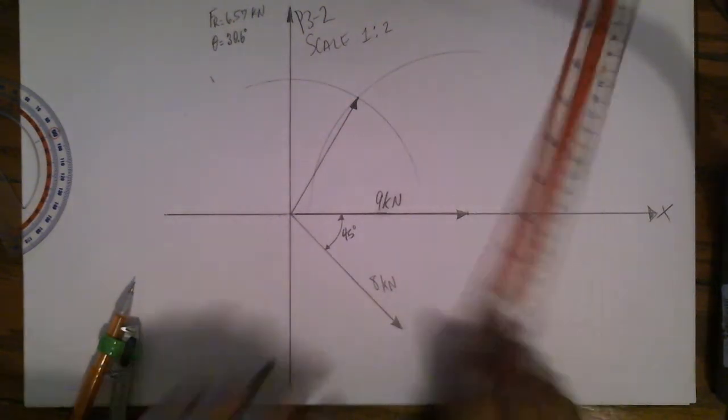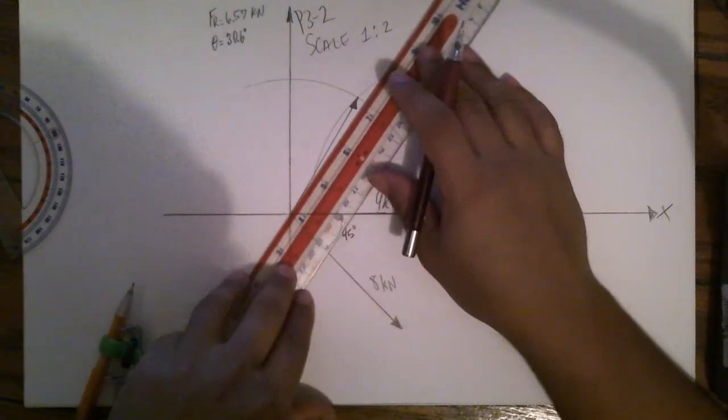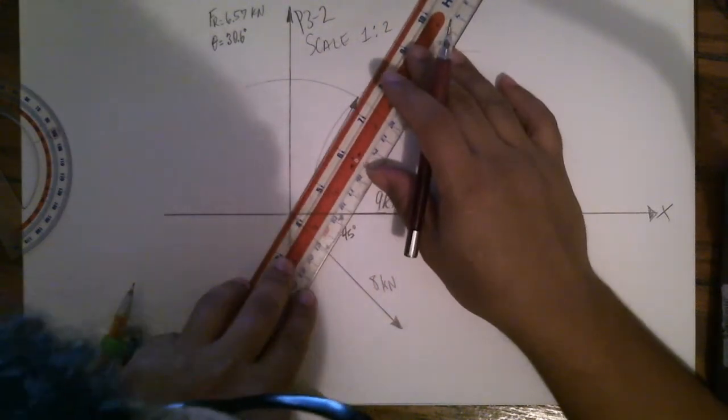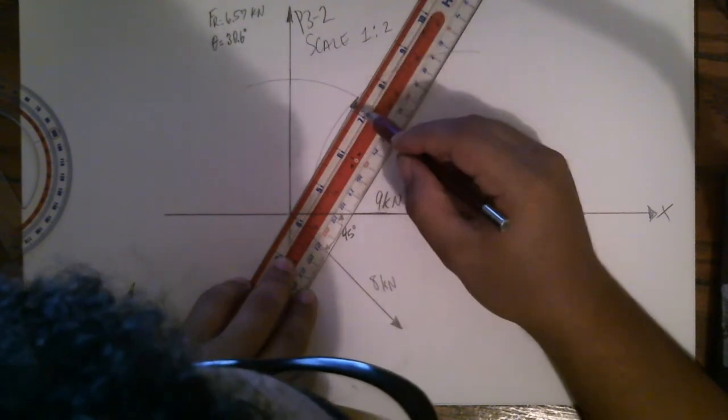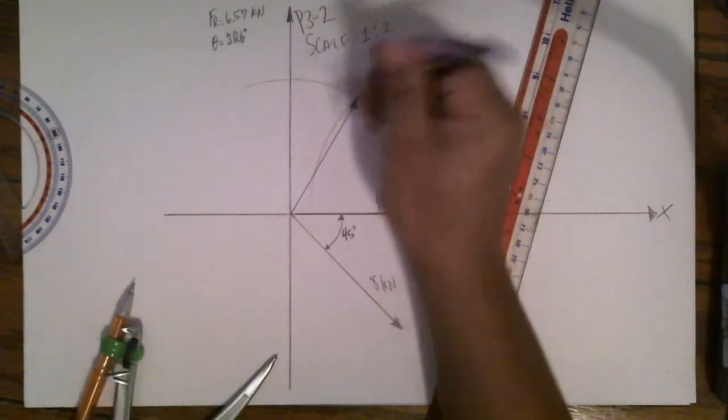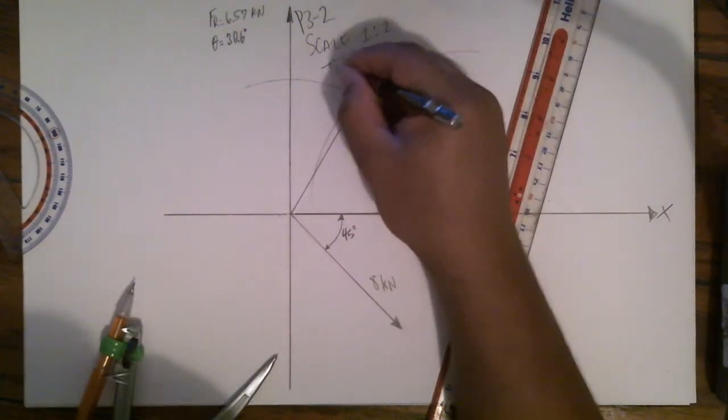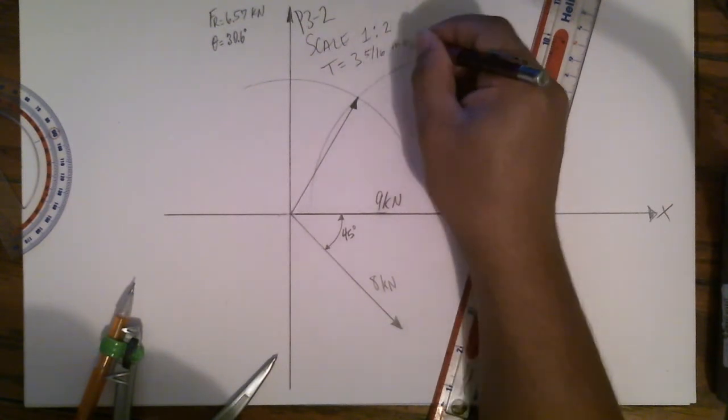Measure the vector T. The vector is about... it's about 3 and 5 sixteenths inch.